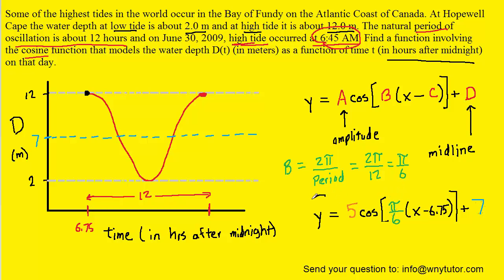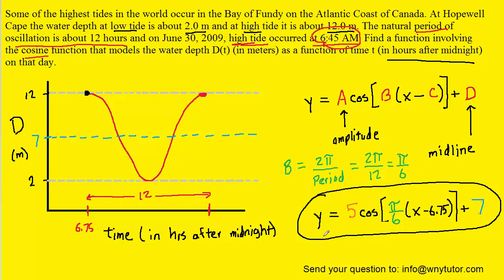And there we have the final answer. This cosine function models the scenario described in the question. If we wish, we can change y to d(t), since we plotted depth as a function of time. With that change, we have the final form of the answer.